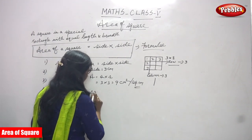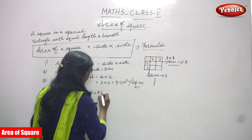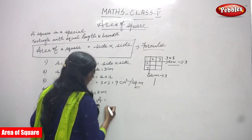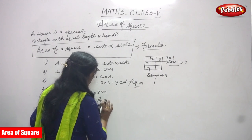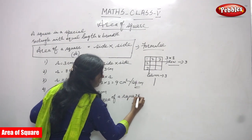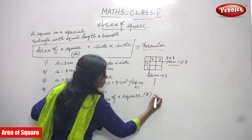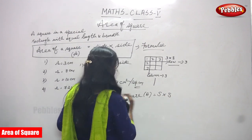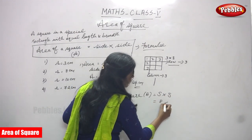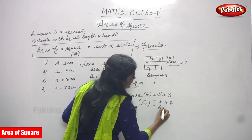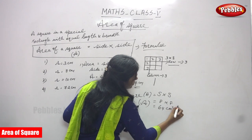Next question: s is equal to eight centimeters. Now you have to find out the area. Area of a square is equal to A equals s into s, that is side into side. Side is given as eight, so eight into eight. Area equals 64 centimeter square.